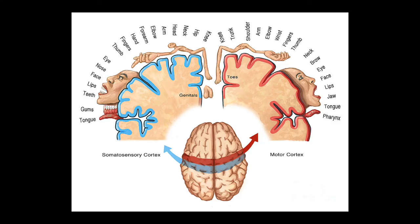Revisiting the motor homunculus — comparing the somatosensory postcentral gyrus in blue versus the motor precentral gyrus — the size reflects how much cortex is dedicated to each body part by function. In the motor cortex, the lips and tongue are large, allowing the fine motor control needed for speech. Other body parts like the arm are small, since less brain tissue is needed for non-complex movements.